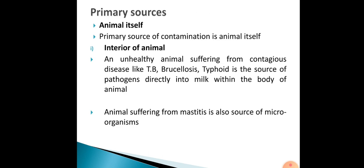We will now discuss the primary sources in detail, starting with the animal itself. The interior of the animal is a primary source of contamination. Unhealthy animals suffering from contagious diseases like TB, brucellosis, and typhoid are sources of pathogens that directly enter the milk within the body of the animal.